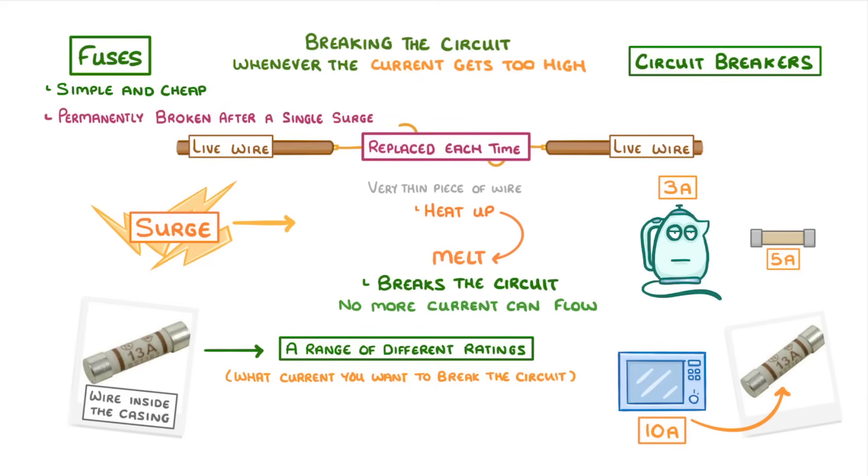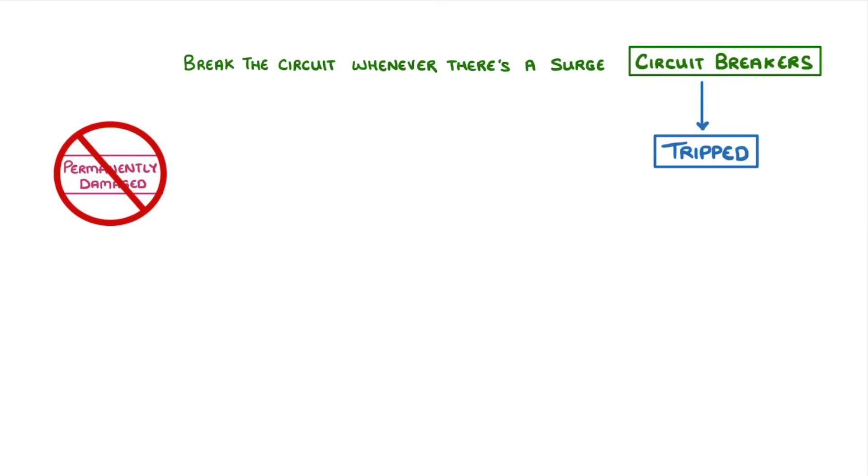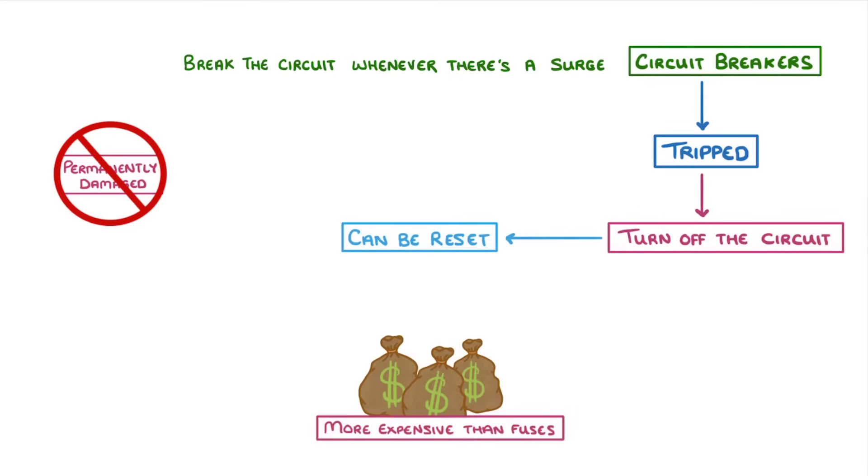Circuit breakers, in contrast, don't have these problems. They work in a similar way to fuses in that they break the circuit whenever there's a surge. However, they don't get permanently damaged. They just get tripped and turn off the circuit. This means that they can easily be reset rather than having to be replaced. The only downside is that they're a bit more expensive than fuses.